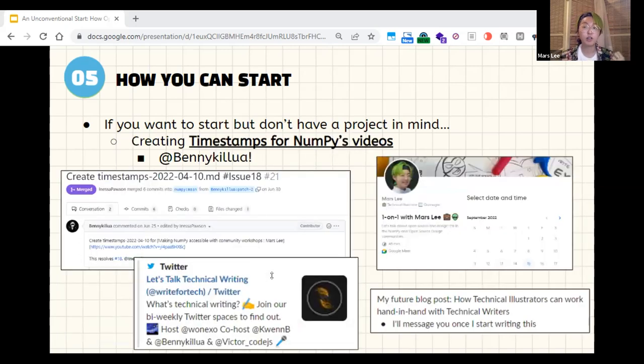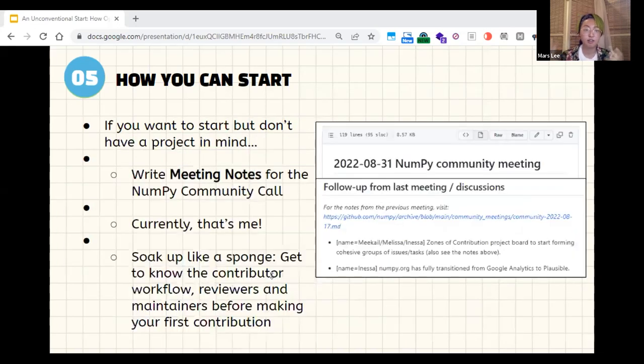If you want to do specific contributions, you could add timestamps. What timestamps do is cut up videos so that they are easier for people to get an overview, digest information. We have Benny here who did a contribution, we set up a meeting, and now we have collaboration ideas. You could also write meeting notes for NumPy, which I do here. In this way, you can sit back and soak up like a sponge, the culture, the workflow, and you could build the confidence to start being in this space.